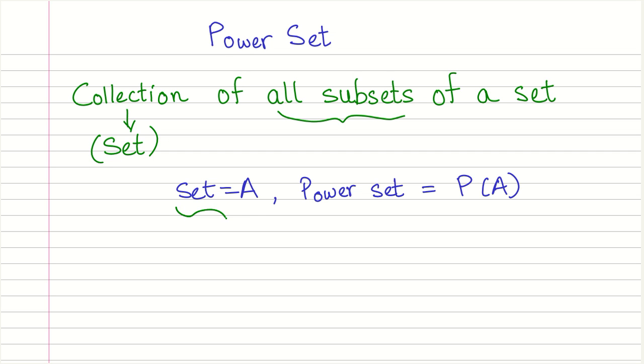So let's say that we have a set which is A, then we represent the power set as P of A. And A we write it in these curly braces. So this represents the power set for the set A.